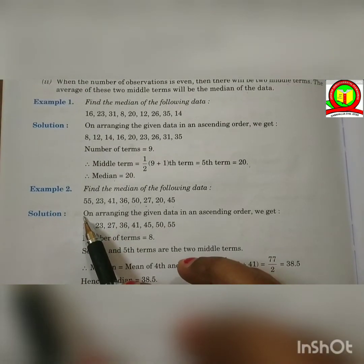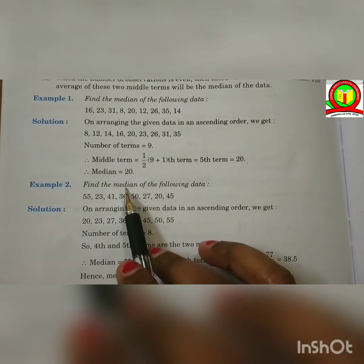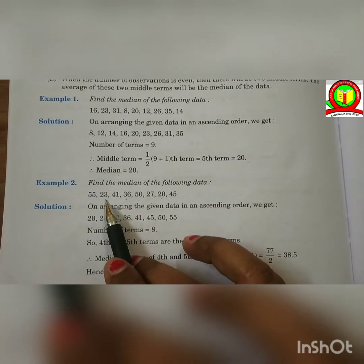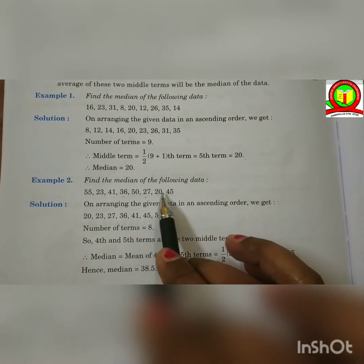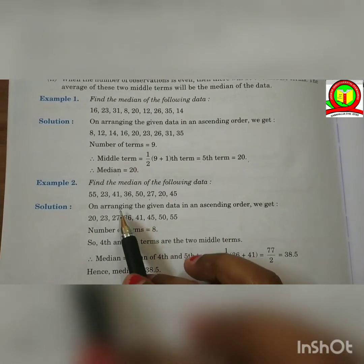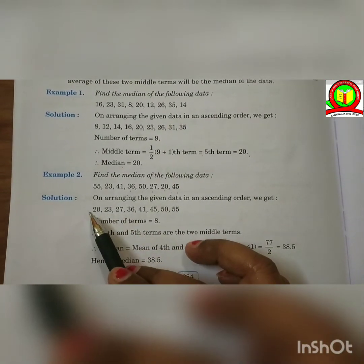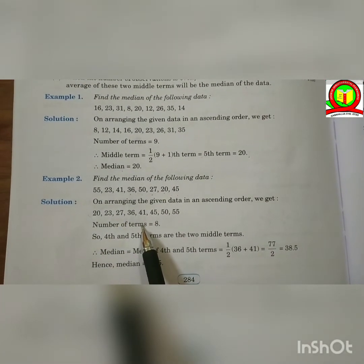Now, the second example is find the median of the following data: 55, 23, 41, 36, 50, 27, 20 and 45. First, we have to arrange the data in ascending order. Then we will get this data. Number of terms here: 8.